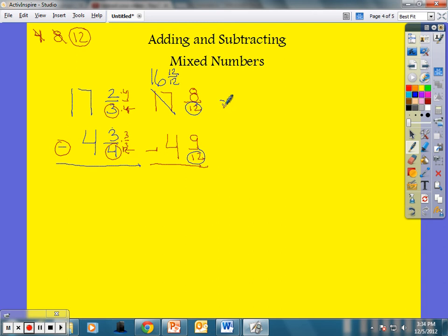I could not subtract the 9/12 from the 8/12, but now I have 12/12 that I can combine with these 8/12. So I now have 16 as my whole number. 12 plus the eight gives me now 20/12. And I'm going to subtract that 4 and 9/12 from my 16 and 20/12.